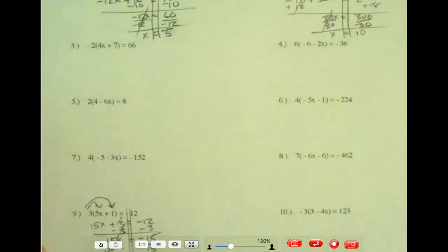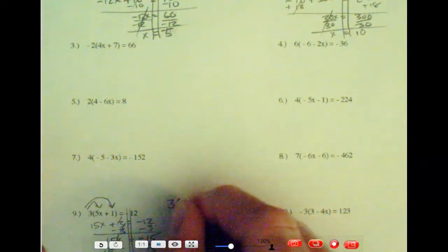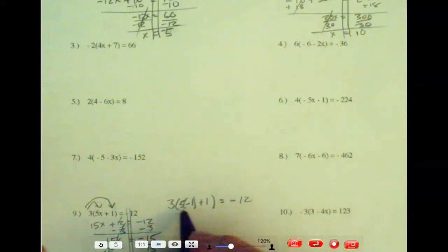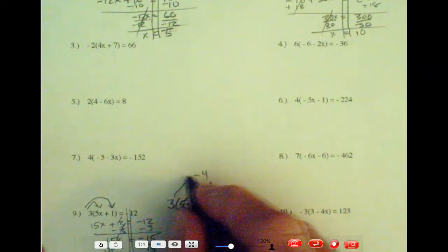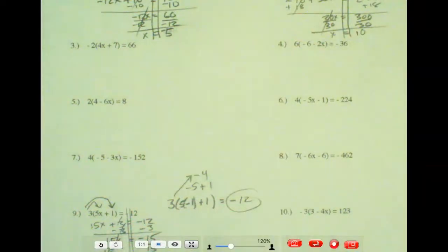You're like, I don't believe it. Let's go in and check it. 3 times, this is going to mean, well, you put this in. It would be 5 times a negative 1 plus 1 equals negative 12. So, well, negative 5. 5 times negative 1 is going to be negative 5 plus 1. That's going to be negative 4. 3 times a negative 4 is a negative 12. So you can always, always check your answers on these.